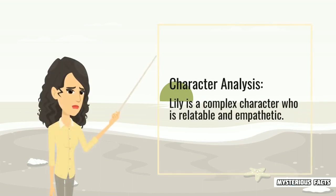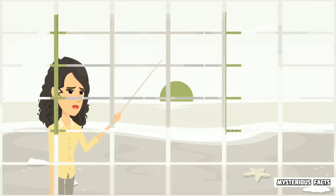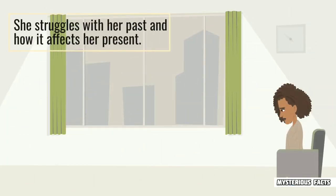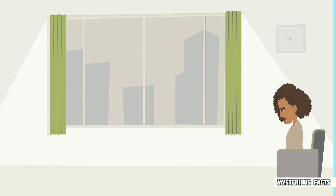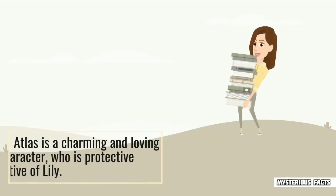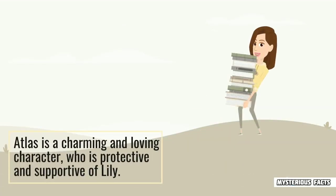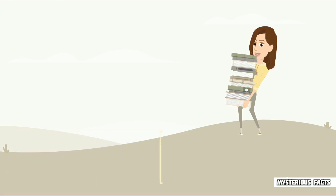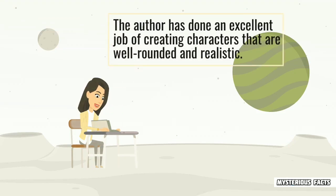Character Analysis. Lily is a complex character who is relatable and empathetic. She struggles with her past and how it affects her present. Ryle, on the other hand, is a layered character whose past trauma makes him complex and unpredictable. Atlas is a charming and loving character who is protective and supportive of Lily. The author has done an excellent job of creating characters that are well-rounded and realistic.